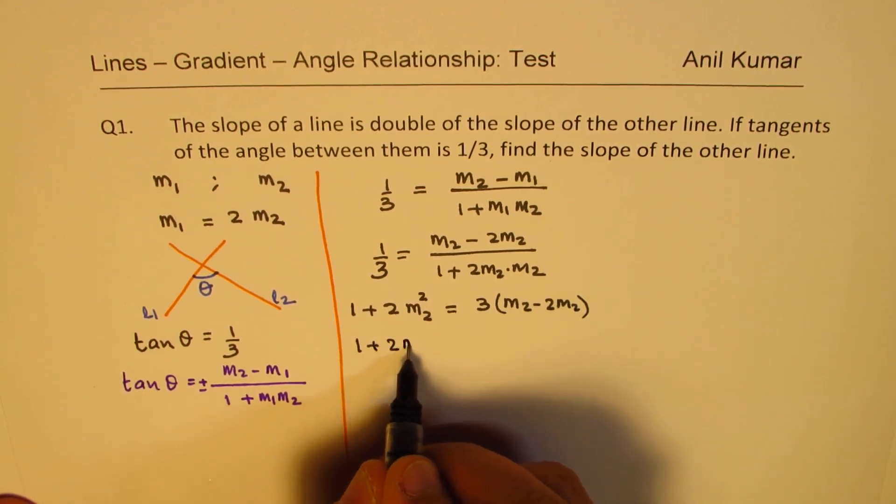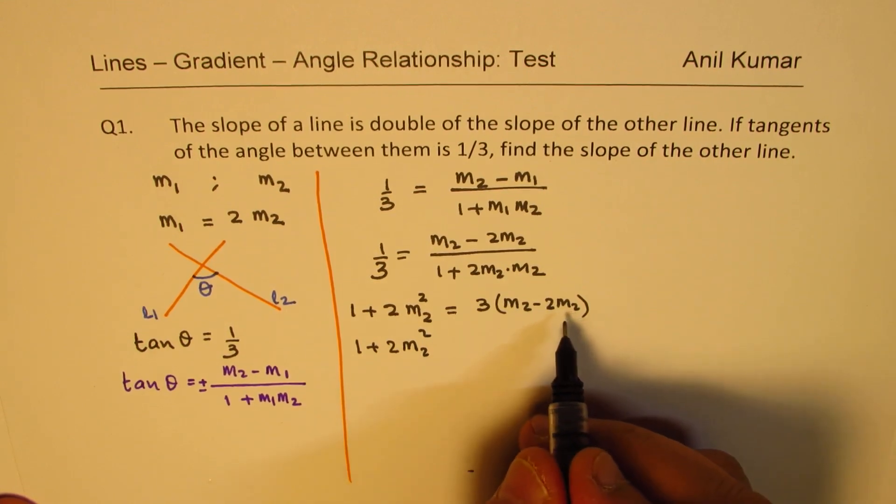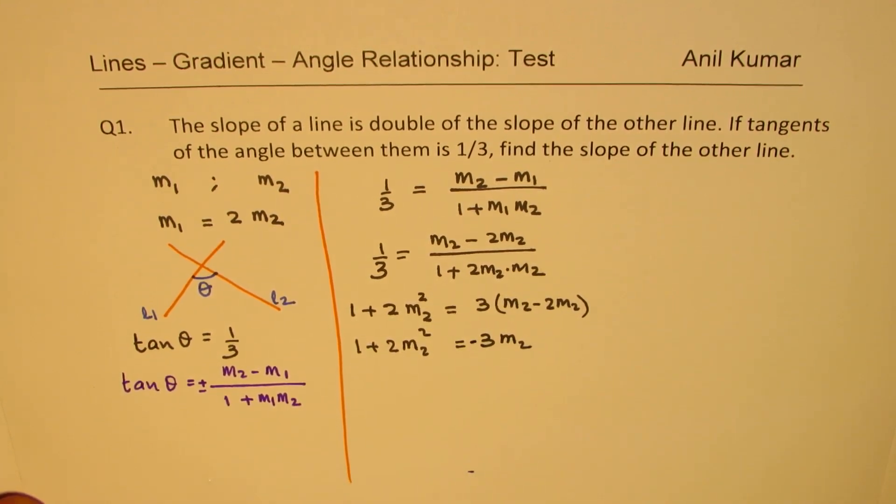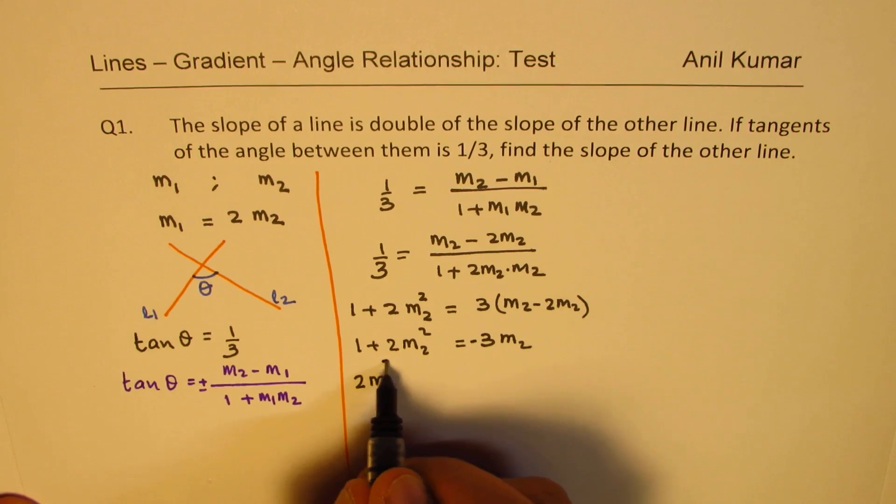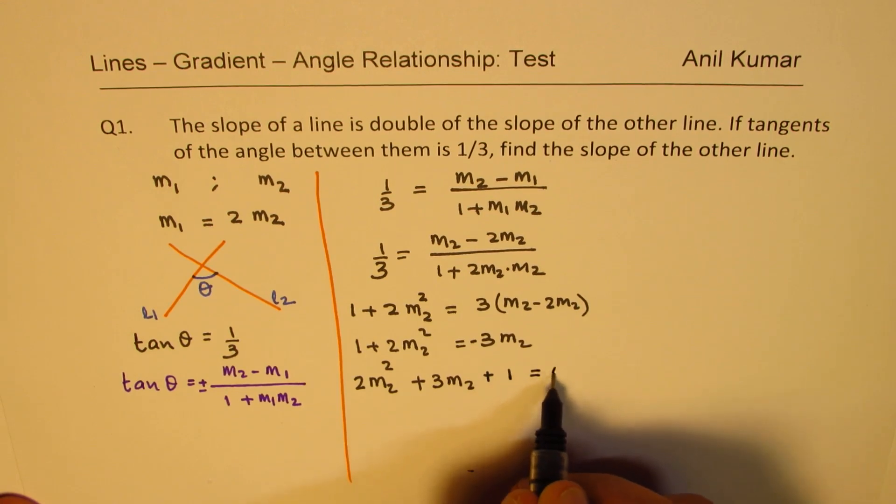Well, that gives us 1 plus 2 m2 square. m2 minus 2 m2 is m2. So it is equals to 3 times m2 with a negative sign. Now, we have a quadratic equation right there.